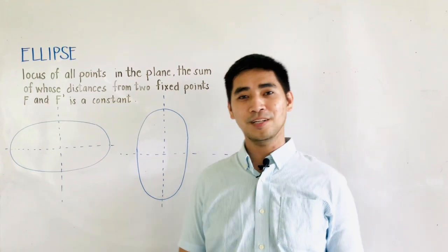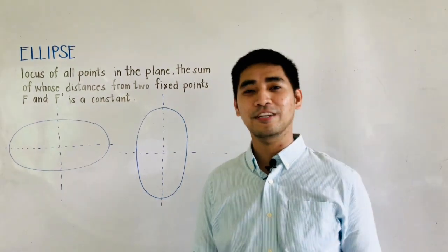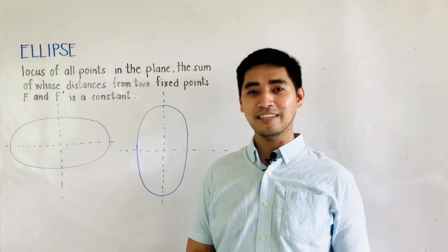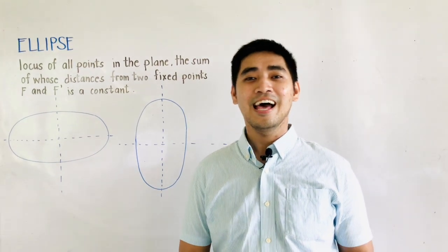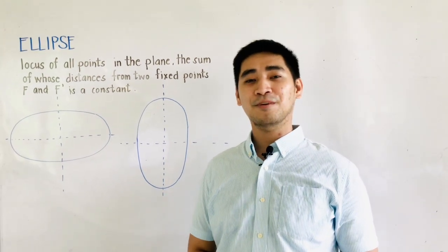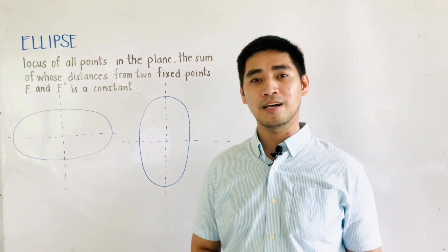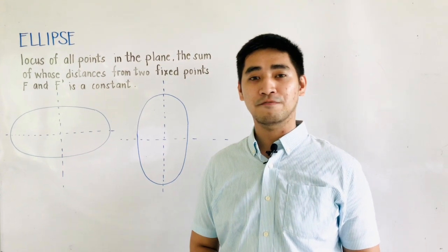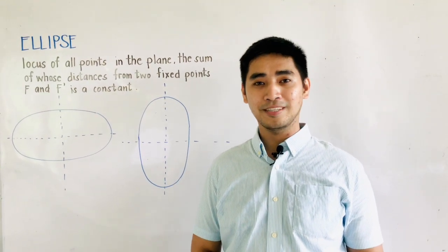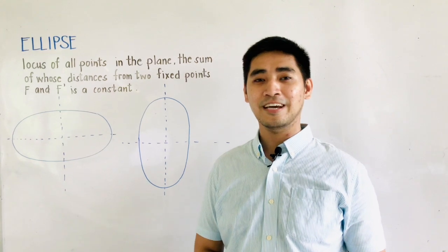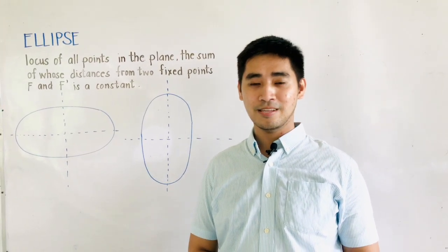Hi, Judgers! Welcome to another segment of Wanarliwag Memorial High School Senior High School Math TV. Last time, we were able to discuss the circle and the parabola — those are the first two conic sections. And for today, we will discuss the third type of conic sections, which is an ellipse.